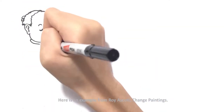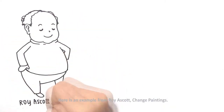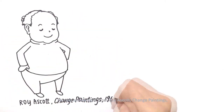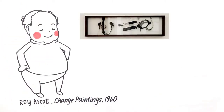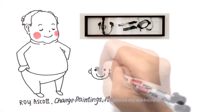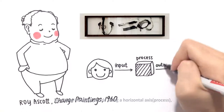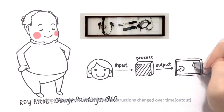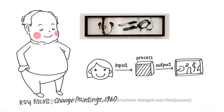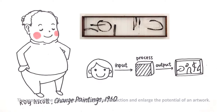Here is an example from Roy Ascott's Change Paintings. As viewers altered the work by sliding the panels along the horizontal axis, the composition of the interactive conjunctions changed. Therefore, the appearance of the cybernetic encourages interaction and enlarges the potential of an artwork.